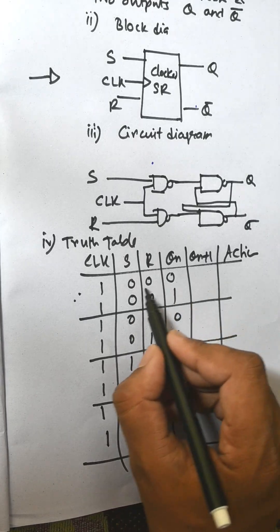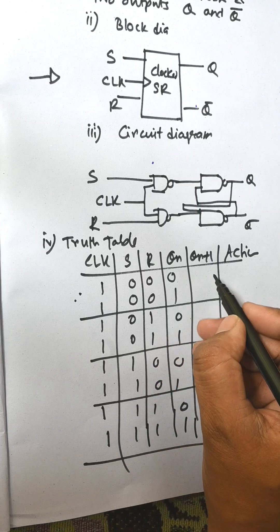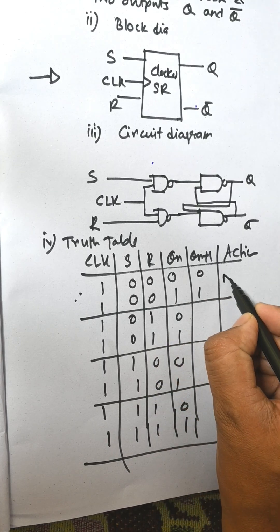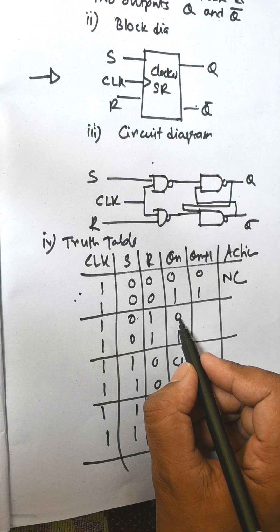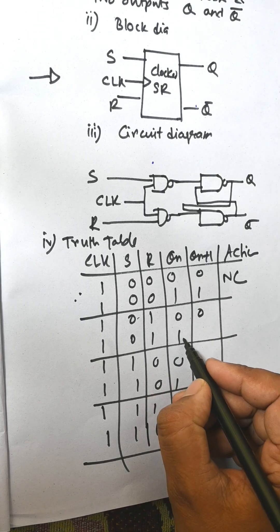These are the four cases. For 0-0, this is no change. For 0-1, when it is 0 that is 0 to 0 remains 0, and 1 to 0, that is reset.